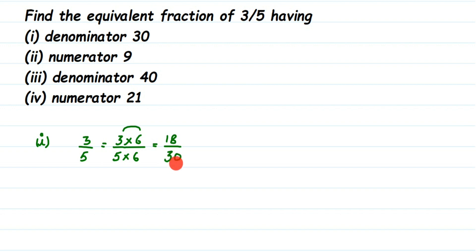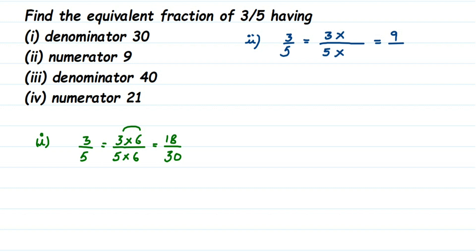In the next question, the numerator should be equal to 9. The number is 3/5 and the numerator should be 9. So with 3, we multiply a certain number to get 9. We know 3 × 3 = 9, so we multiply by 3 in the numerator and the same 3 in the denominator: 5 × 3 = 15. So the answer is 9/15.